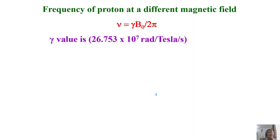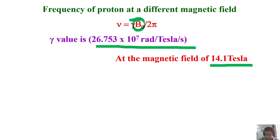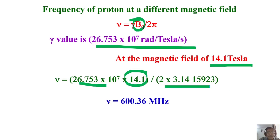Now I change the magnetic field to 14.1 tesla — all other factors remain the same; only B naught changes. Plugging in the new value, the resonating frequency becomes 600.36 MHz. When the magnetic field is increased six times (from 2.35 to 14.1 tesla), the resonating frequency also increases approximately six times — confirming the linear relationship.